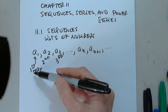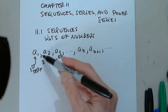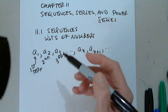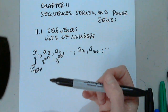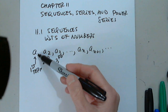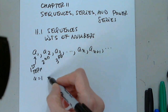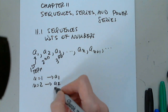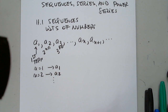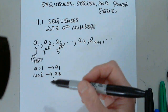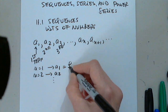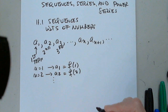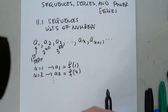There is a correspondence between the terms of the sequence — so these are terms — and the natural numbers. When n is 1, we have a1. When n is 2, we have a2, and so on and so forth. If we can use a function, then a1 will be f(1) and a2 will be f(2). This is not always possible.